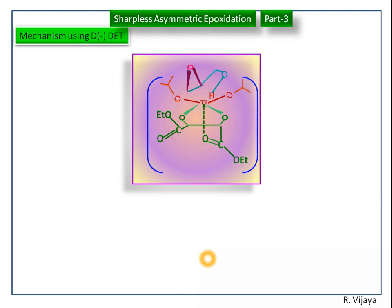Now we have the si-face attack of the epoxide using minus diethyl tartrate. I hope you can understand the mechanism of Sharpless Asymmetric Epoxidation. Thank you.